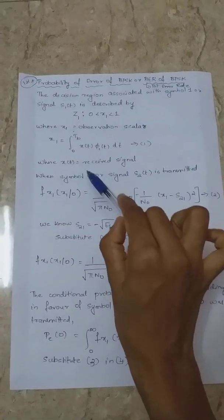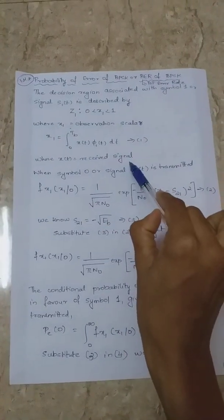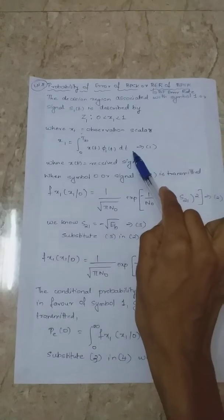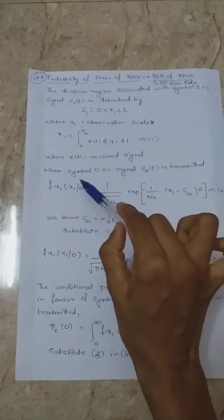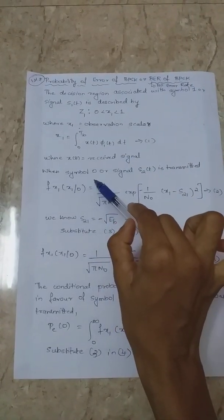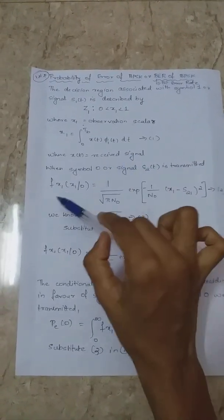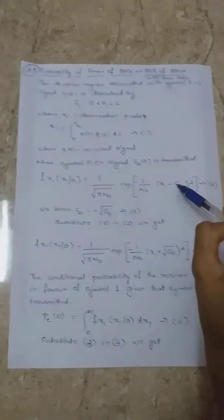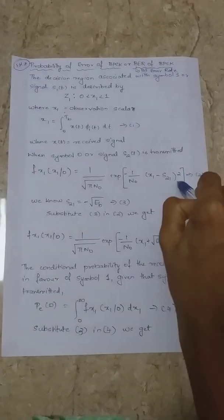Here, X(t) is the received signal. The bit error rate involves the received signal magnitude. For symbol 0, we apply the CDF and IND equation, giving equation number 2.